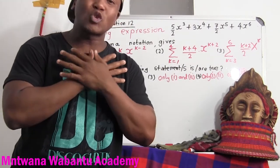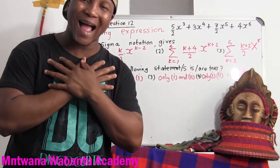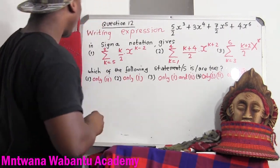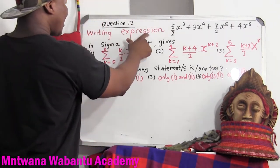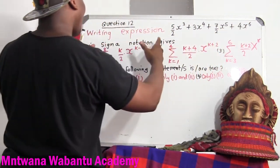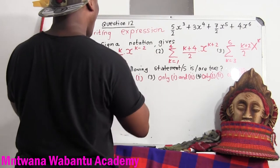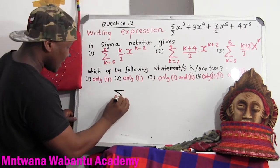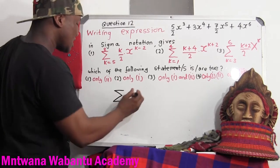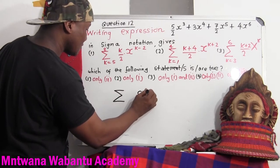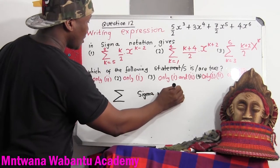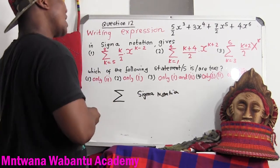I'm Hamish, or you can call me Mtuana Waband. Let's get started. So we have a question right here. This question says: writing an expression in sigma notation. So we take this expression and write it in this format here — we call it sum or sigma notation. Most commonly, they call it sigma notation. Let me show you how to use sigma notation.